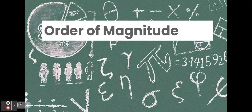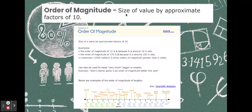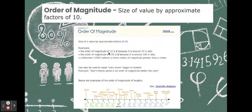Order of magnitude. Order of magnitude is a size of value by approximate factors of 10. And we'll get into this a little bit more later on in later lessons. So, it's a size of a value by approximate factors of 10. And for example, the order of magnitude of 12 is 1 because it's close to 10 in size.